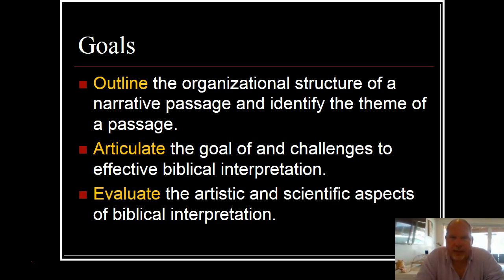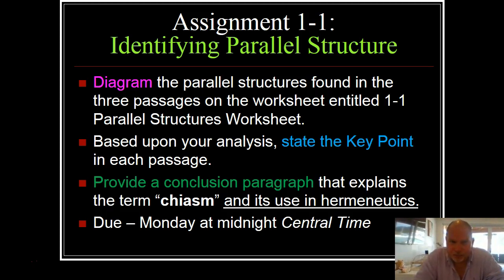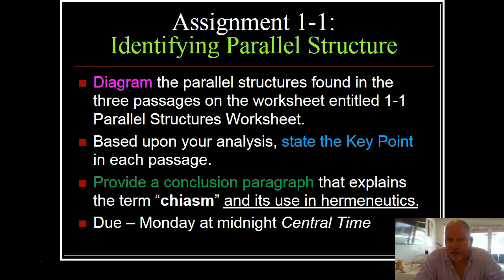The goals were to outline the organizational structure of a narrative passage, to articulate the goal and challenges to effective biblical interpretation, and to evaluate the artistic and scientific aspects of biblical interpretation. Our first assignment was really to look at chiasm as a mechanism to understand the key of a passage. On the whole, folks did a good job on this assignment, and in fact people did a very good job throughout the entire week. I'm tickled that we have such a bright and engaging class — I think that's going to bode well, and I look forward to the next several weeks.